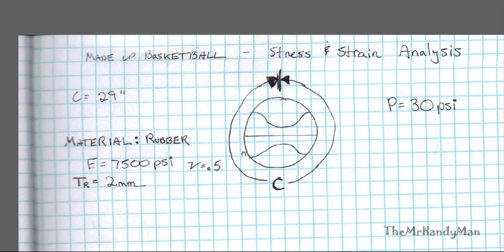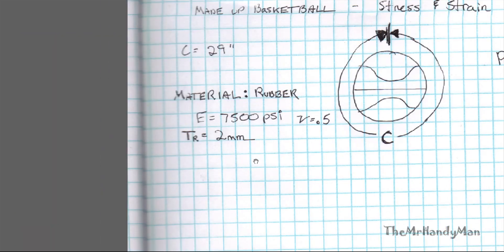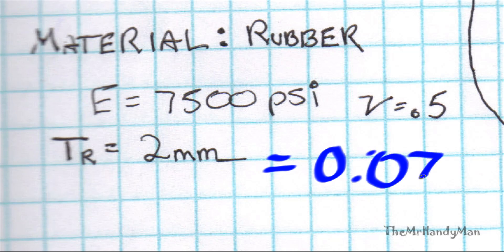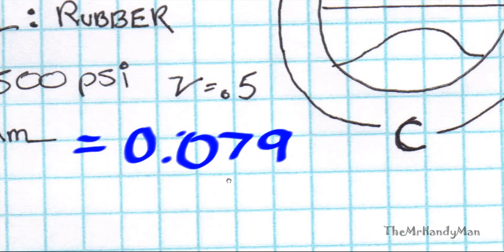Please don't criticize me on any of these details — I don't know if they're super accurate. Since everything's made in China, we're going to convert the film thickness from millimeters to inches. I'll just assume you know how to do this part — it comes out to 0.07079 inches, just to keep us within the same unit system.